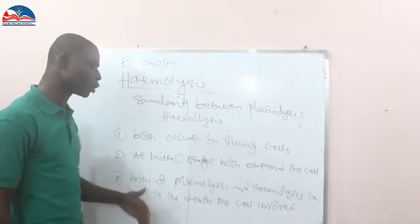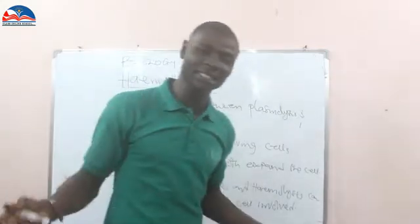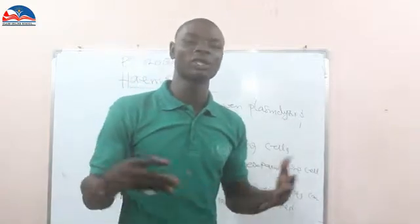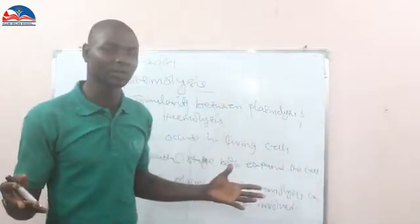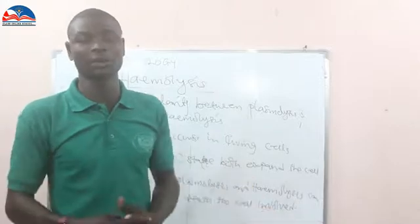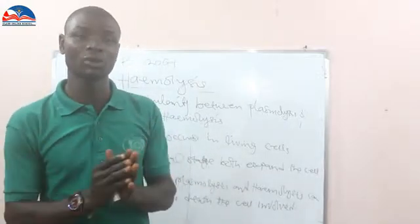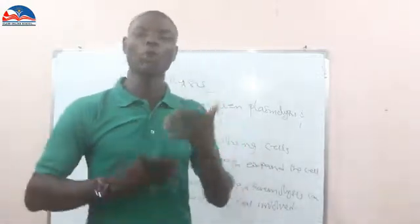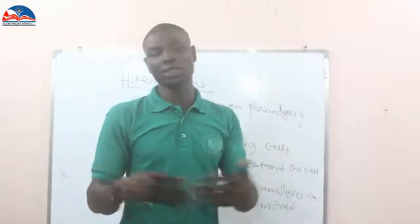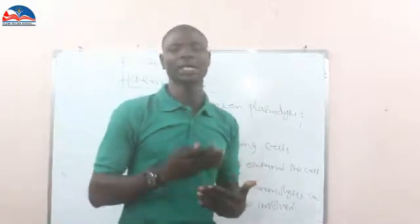The third similarity is that both plasmolysis and hemolysis can lead to the death of cells involved, either plant cells or animal cells. When there is excess movement of water out of the cell, it can cause the plant cell to die — that is plasmolysis. And when there is an inflow of water into the red blood cells to the extent that they are fully charged and burst, this can also lead to the death of the cell if there is no maintenance.